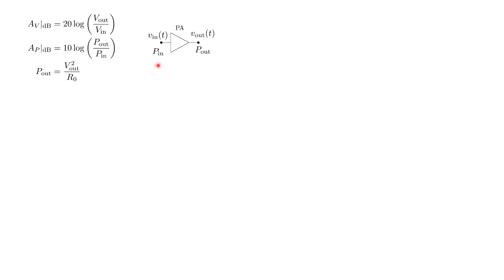the gain of this amplifier can simply be given in linear terms as P_out over P_in, and this is the gain in linear. This is the linear gain.